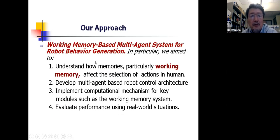So our approach is a multi-agent system based on working memory system. And our approach was first to understand how memories, particularly working memory, affect the selection of actions in humans. So we studied literature in psychology, neuroscience, etc. And then we developed multi-agent based robot control architecture and implemented computational mechanisms for key modules, such as working memory system, which are shown in this presentation.